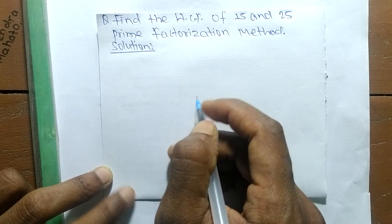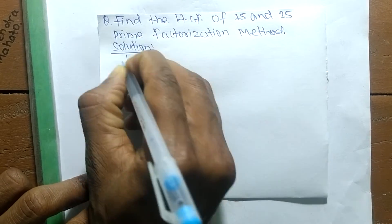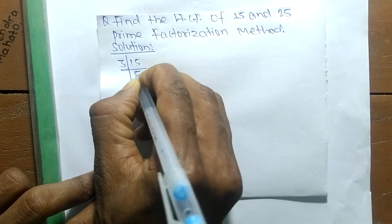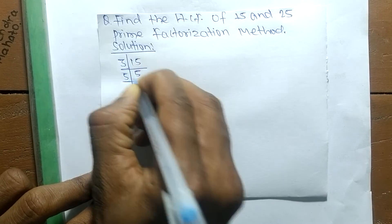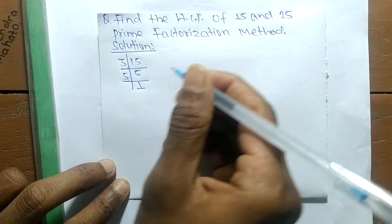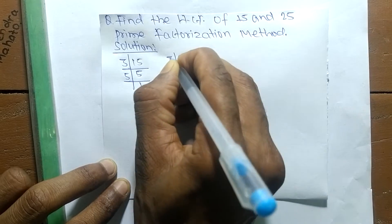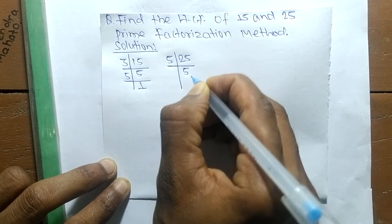So first of all we find out the prime factors of 15. So it is 3 times 5 equals 15, and 5 times 1 equals 5. The prime factors of 25 are 5 times 5 equals 25, and 5 times 1 equals 5.